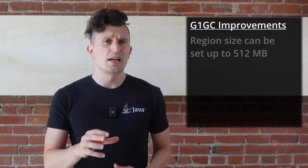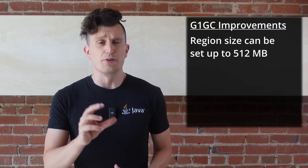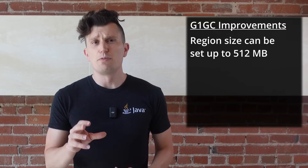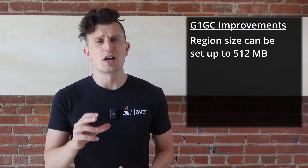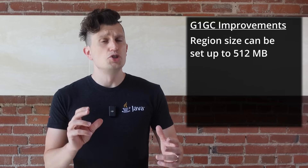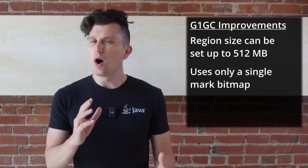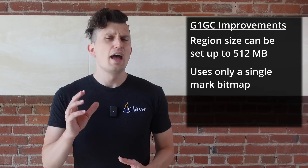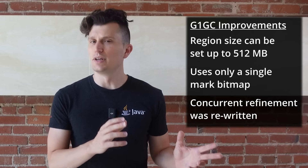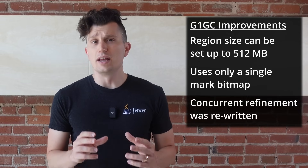The G1 Garbage First garbage collector has been the default garbage collector on HotSpot since JDK 9. As a result, it receives considerable attention from the GC team and has seen several key updates. G1 region size can now be set up to 512 megabytes — previously it was 32 — which can be helpful for reducing memory fragmentation on applications that work with a lot of large objects. G1 now uses a single mark bitmap instead of two, which can save about one and a half percent of heap space. How G1 calculates concurrent refinement has also been updated, which should result in improved throughput.